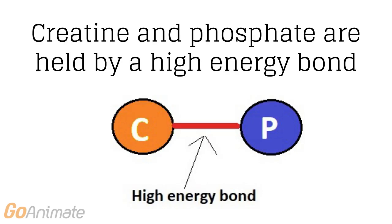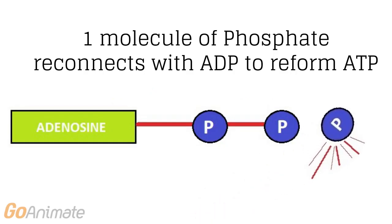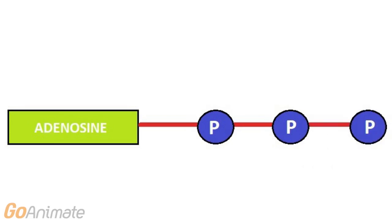One creatine molecule and one phosphate molecule connected by a high energy bond creates a PC molecule. The phosphate molecule splits from the creatine molecule, producing only energy. This energy propels the single phosphate molecule towards the ADP and reconnects with the high energy bond. Adenosine triphosphate is re-synthesised as there are now three molecules of phosphate again.